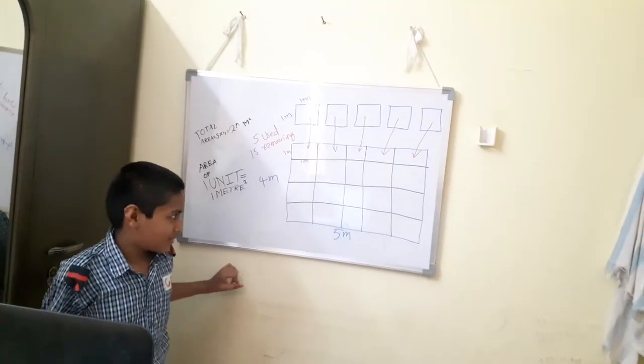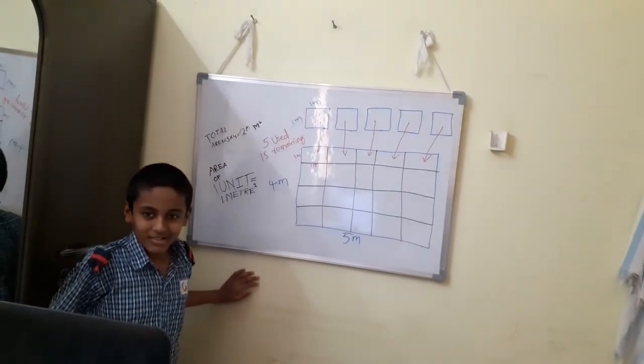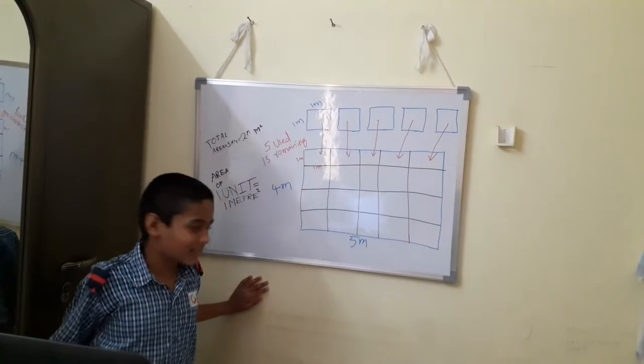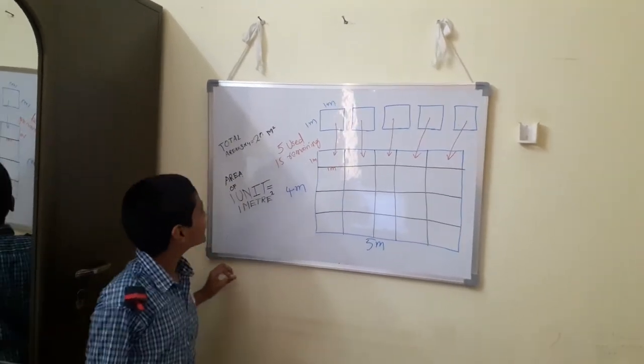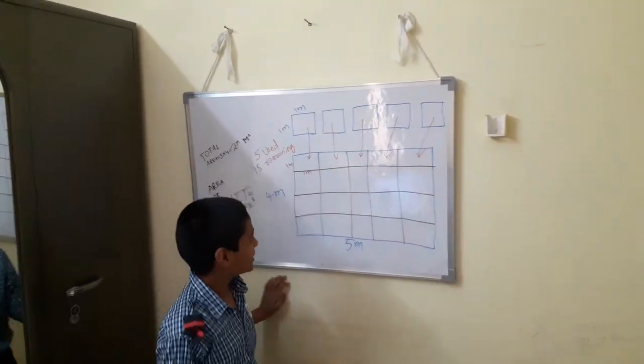Ma'am, that's the formula. Formula of area equal to, four into five. You have to tell length into breadth. Okay, right.